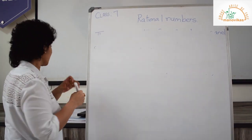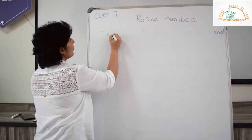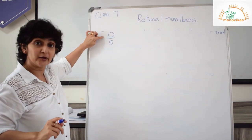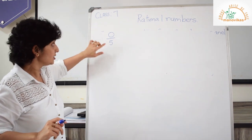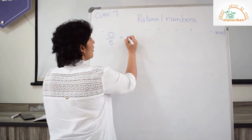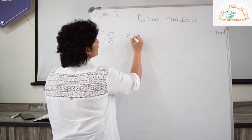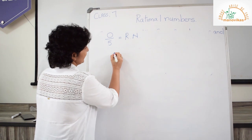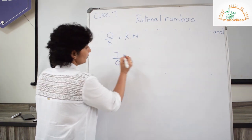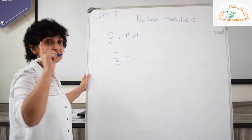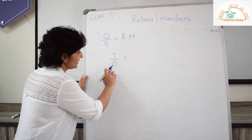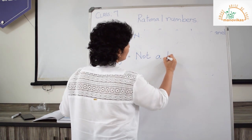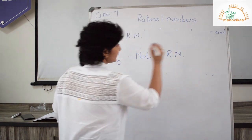My next example is 0 upon 5. Remember, 0 is in your numerator, not in the denominator. So this is also a rational number. But if I have 7 upon 0, your condition was there should be no 0 in the denominator, so this is not a rational number.